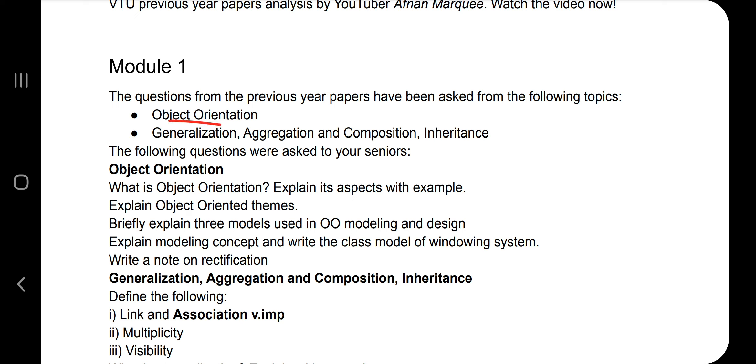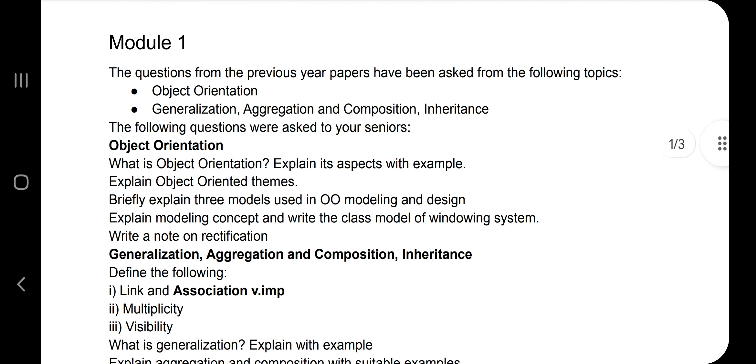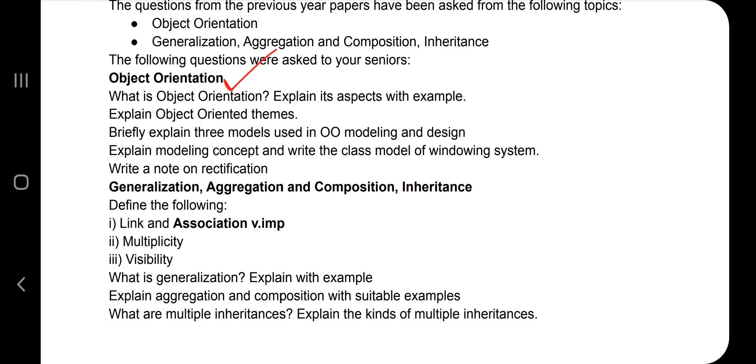From Module 1, the important topics are Object Orientation and Generalization, Aggregation, Composition, and Inheritance. For Object Orientation, there are a few things: what is object orientation, explain its aspects with examples, explain object-oriented themes, and the models used in OO modeling and design and the modeling concept class model of windowing system and rectification.